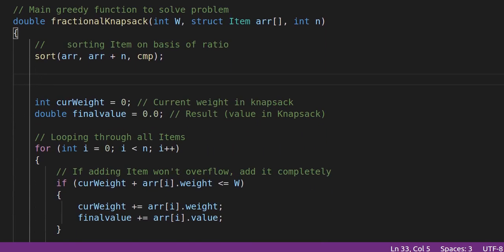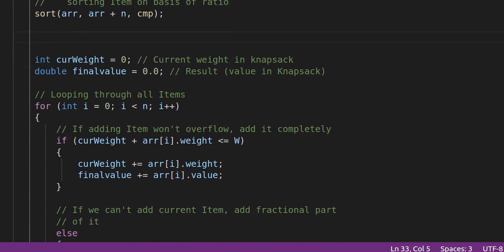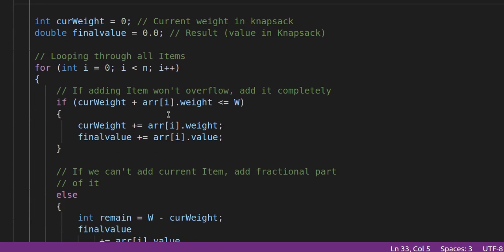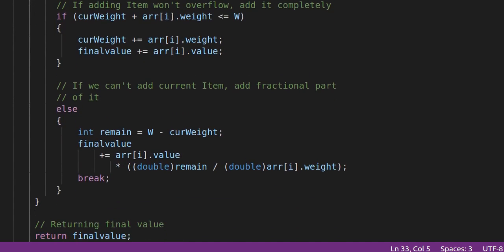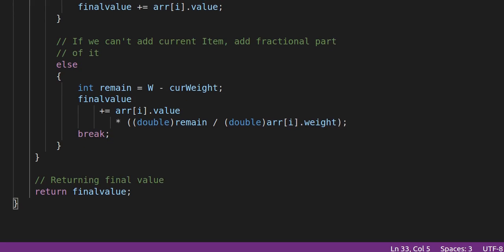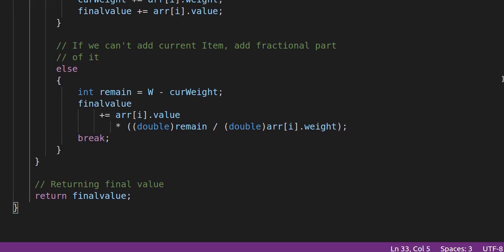So here we set the current weight to 0 and the final value to 0. Then we loop through all the items, and we check if we can include the item as a whole or not. If we can, then we will include the item as a whole, and if we can't, then we will include the item as a fraction. Once we are done with this, we will return the final value.